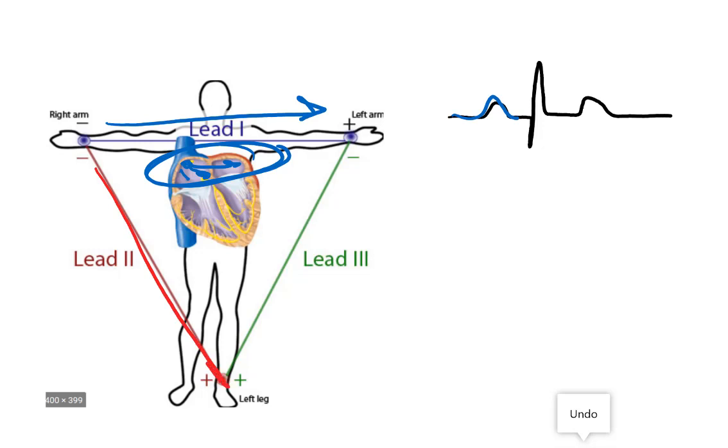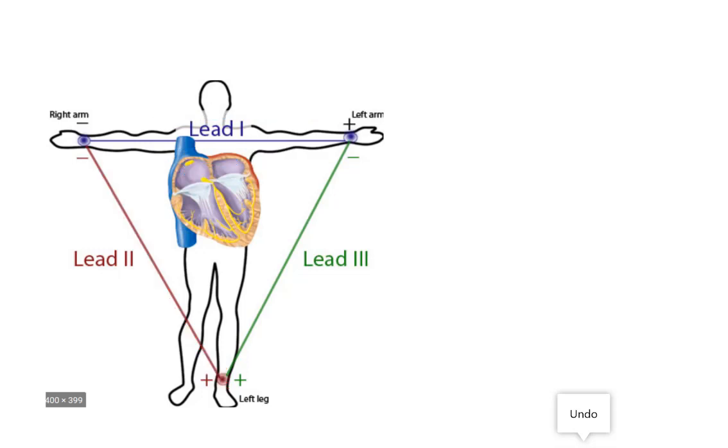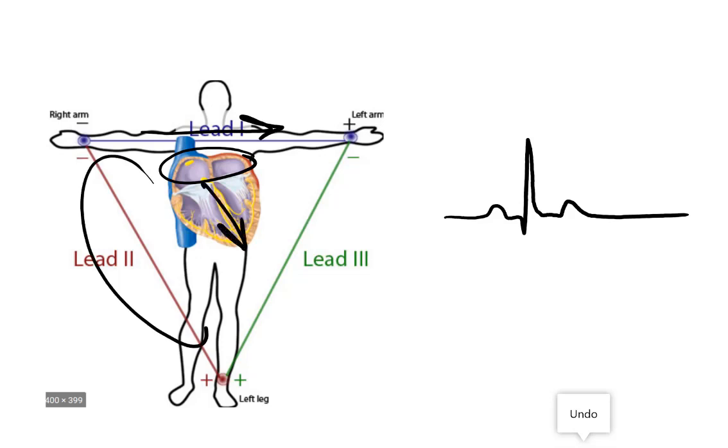Lead two also is going to show a positive wave, but it just won't be as big. So in conclusion, on an electrocardiogram, you will get bigger waves in locations where they would be more parallel to the alignment of the leads.